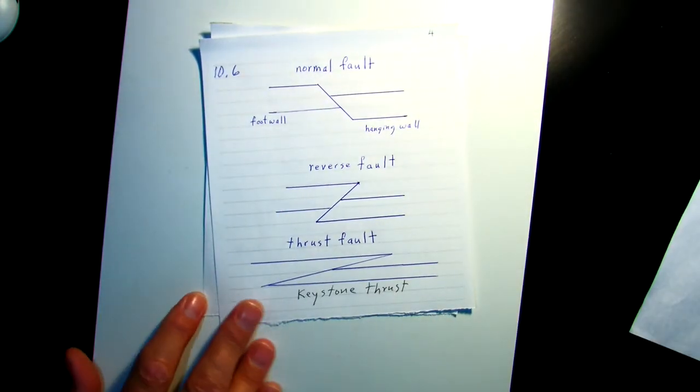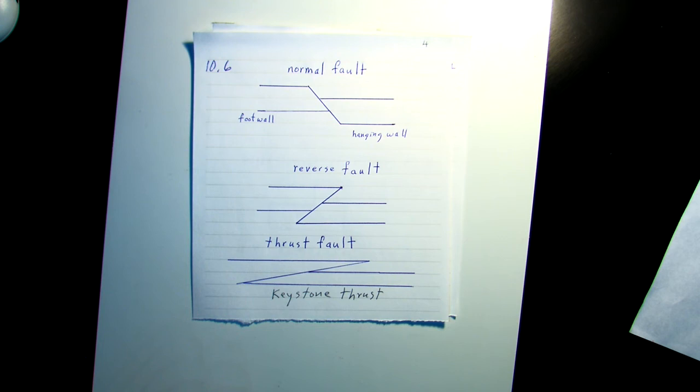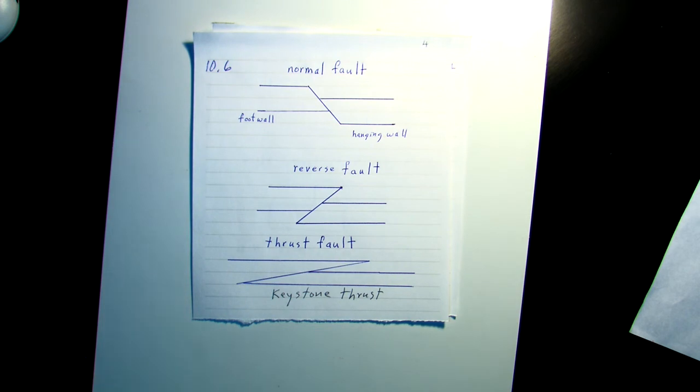Joints are simply cracks in the rock, but there's no movement. Faults, on the other hand, the rock layers break in response to stress, and the parts move in relation to each other. It does not matter which one moved or both moved. Faults are named according to their relative movement, and each are in response to a different kind of stress.